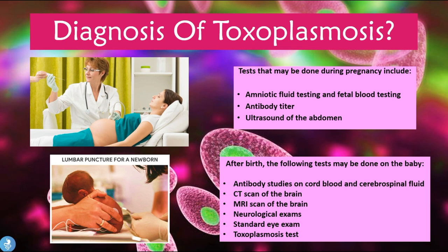After birth, the following tests may be done on the baby to confirm the diagnosis. We can do antibody studies on cord blood or cerebrospinal fluid (CSF), which is collected through a lumbar puncture — a needle inserted into the cerebrospinal space to draw and test fluid for the presence of the parasite. The baby can also have a CT scan of the brain showing hydrocephaly, macrocephaly, or microcephaly, an MRI scan of the brain, a neurological exam, a standard eye exam, and a specific PCR-based toxoplasmosis test.